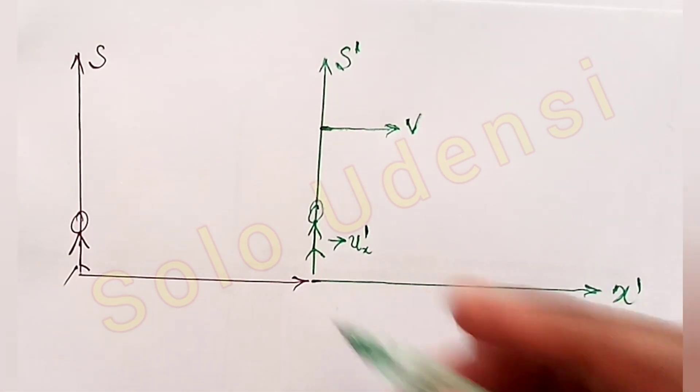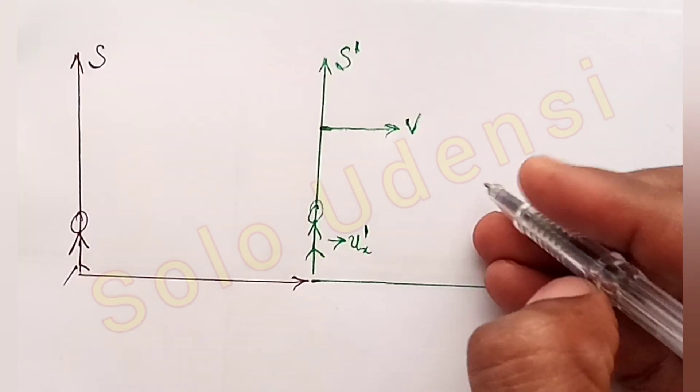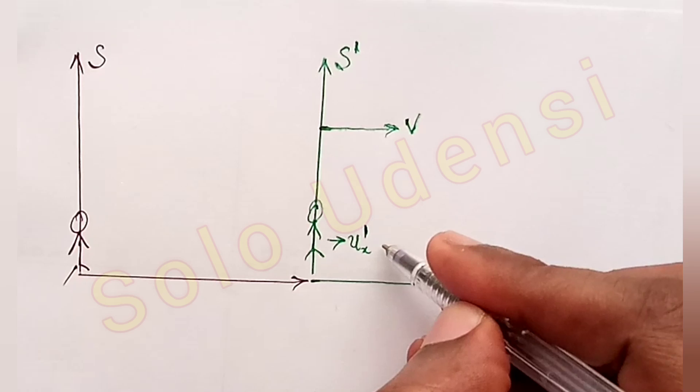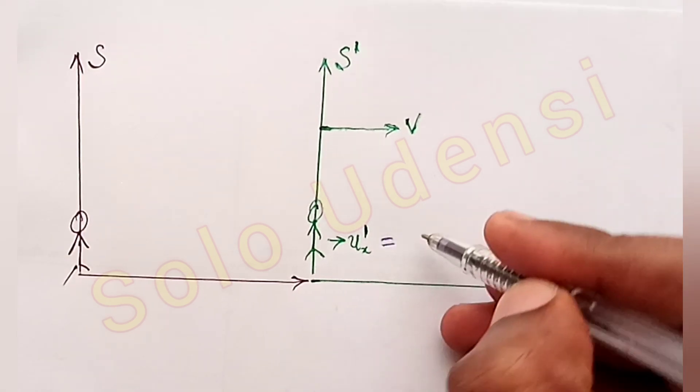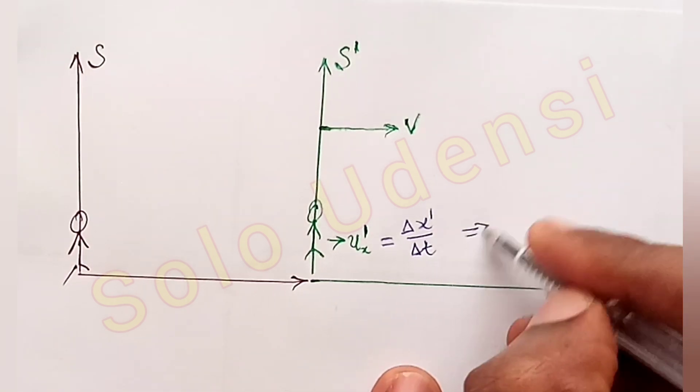So from here, you will see that Ux' is equal to change in the displacement over change in time.